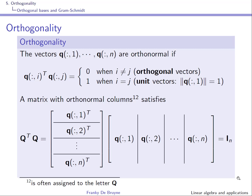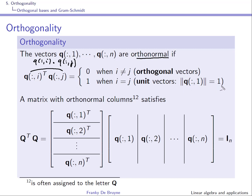Vectors q1 through qn, which are column vectors, are orthonormal if their scalar product is 0 when i and j are different, and it is 1 when i is equal to j. So when i and j are different, the vectors are orthogonal, and when i equals j, what you're computing is the length squared, and this length squared is 1, meaning they have unit length.